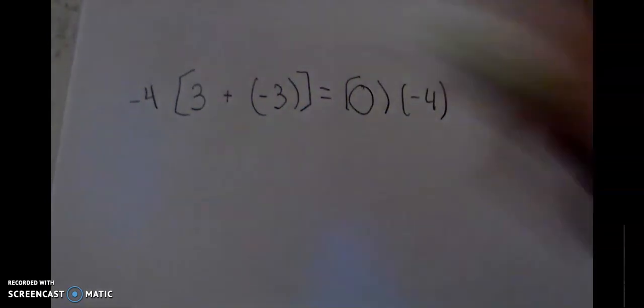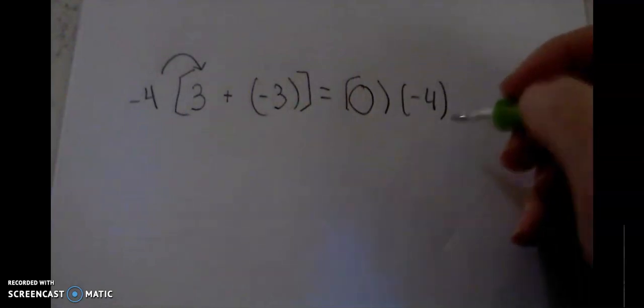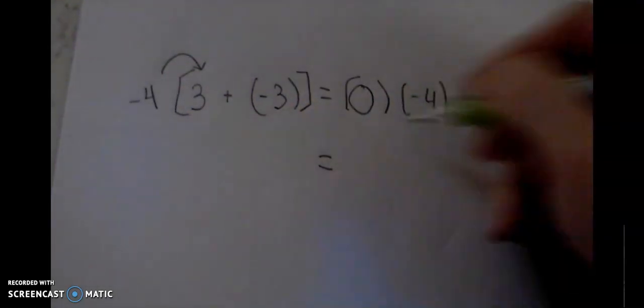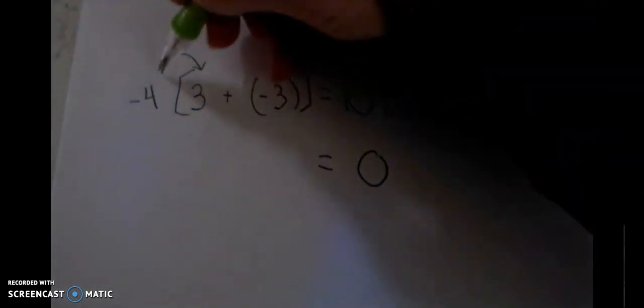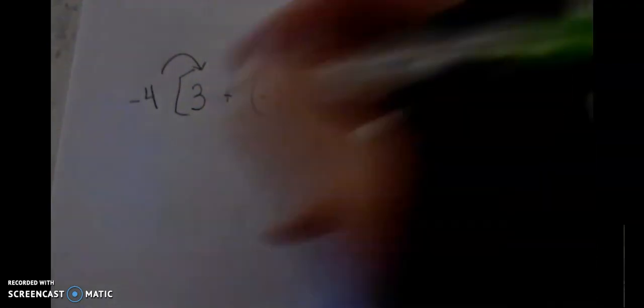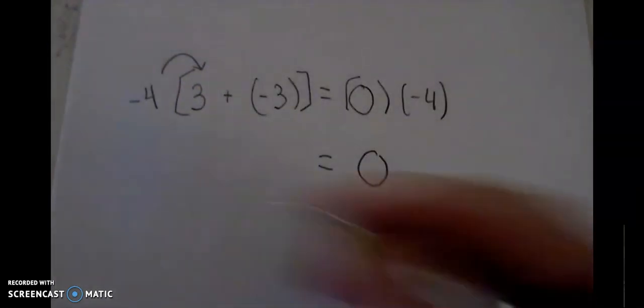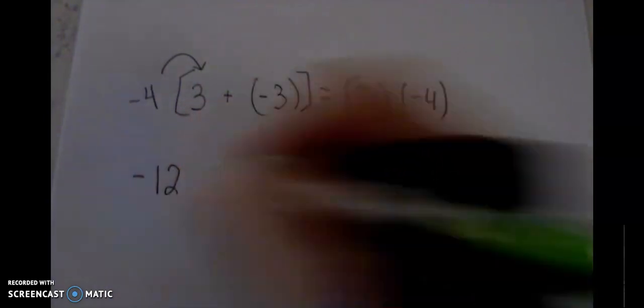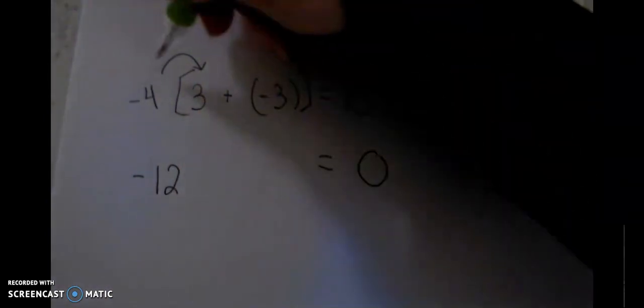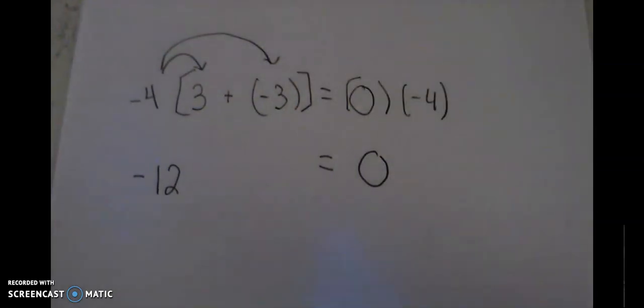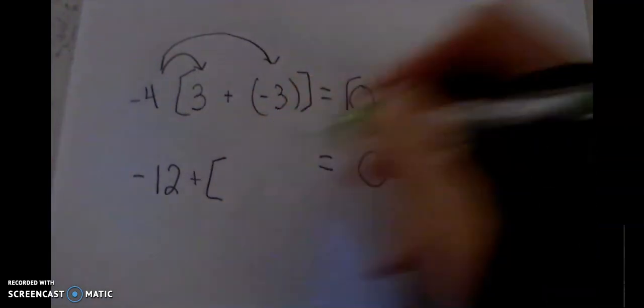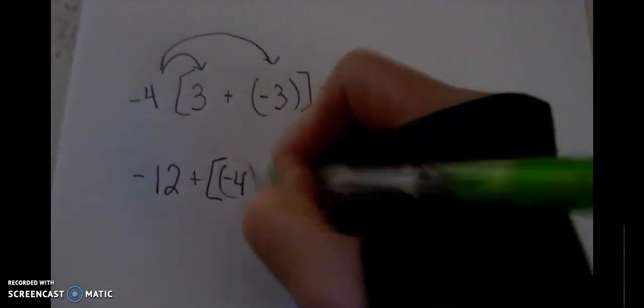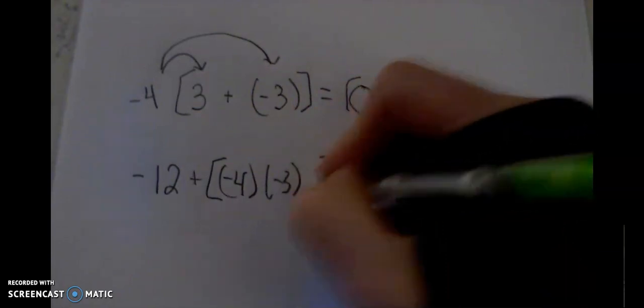Okay, now what happens? I'm going to distribute negative 4 times 3. Actually, let me just quickly over here, what happens? Zero times negative 4 is zero. Great. All right, back to distributing. I'm going to distribute negative 4 times 3. We already accepted that negative times positive is negative twelve. Great. Then I'm going to distribute negative 4 times negative 3. Now that's the question, right? So now I have that negative 4 times negative 3.